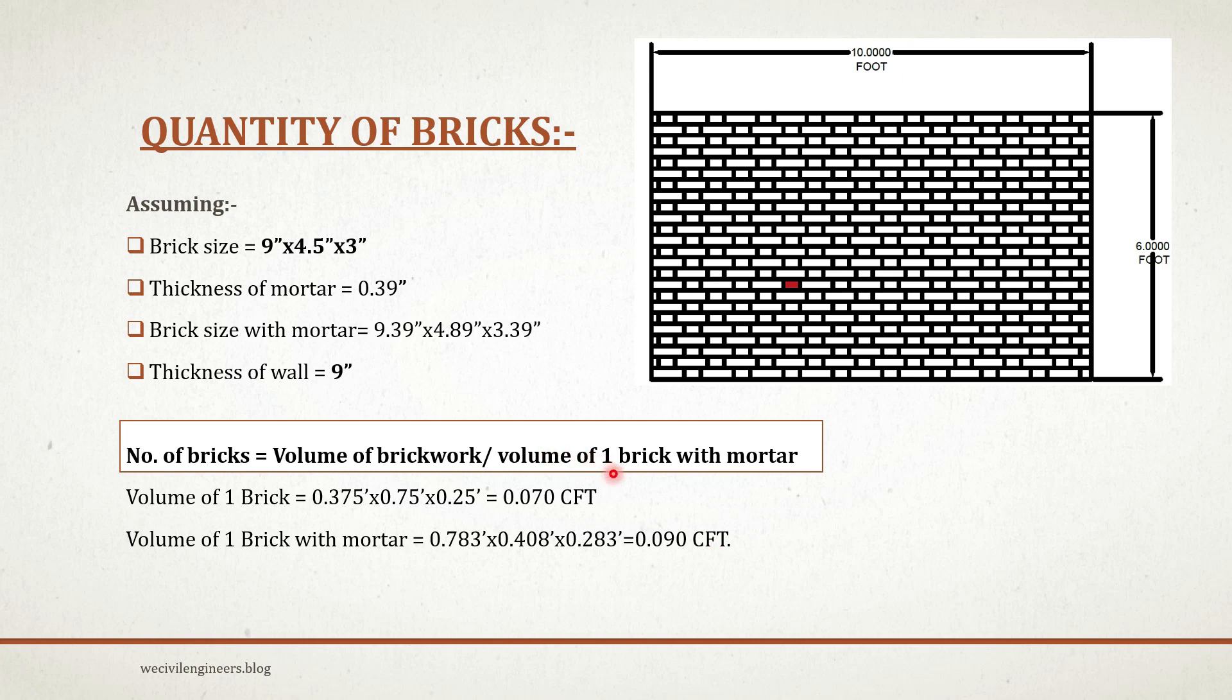Now we have the volume of one brick with mortar in terms of cubic feet. Let's derive the volume of brickwork: length multiplied by height multiplied by thickness, which equals 10 multiplied by 6 multiplied by 0.75, which equals 45 cubic feet. So if you divide this 45 cubic feet by 0.090 cubic feet, you will get the number of bricks.